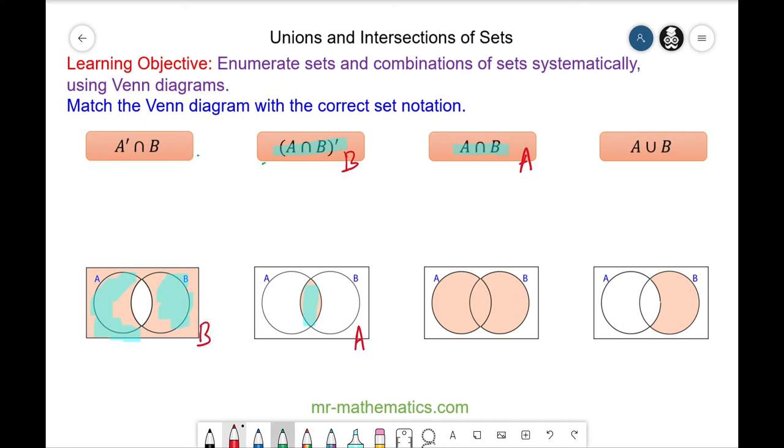And then next we know A in union with B is the area of the two circles in total. So this one matches with this one.